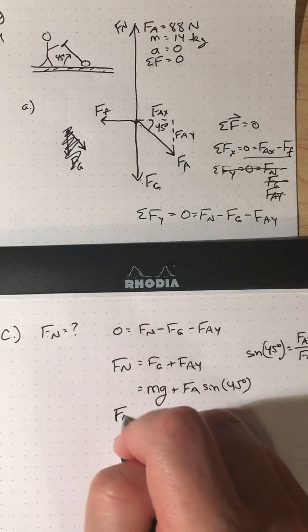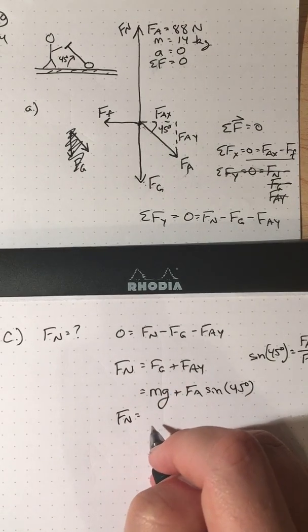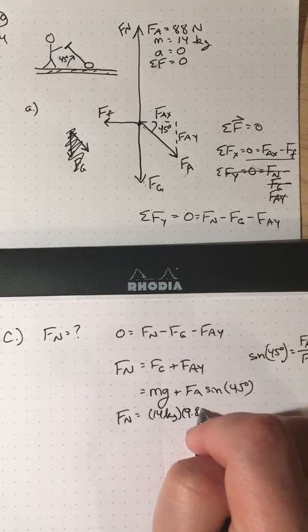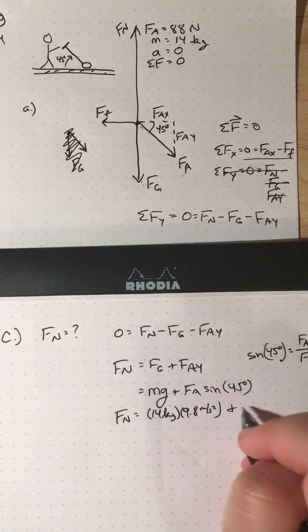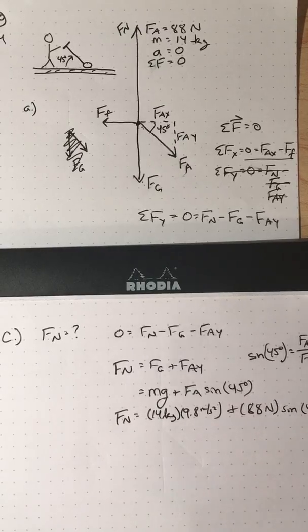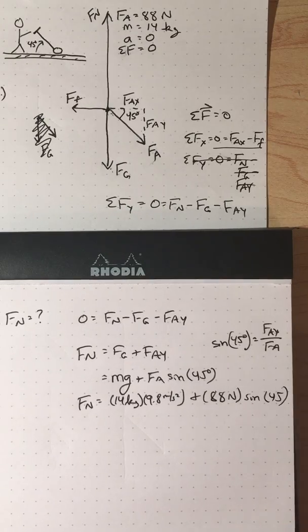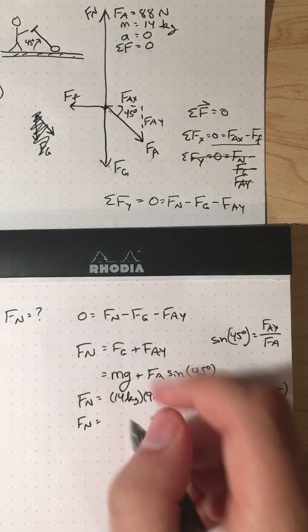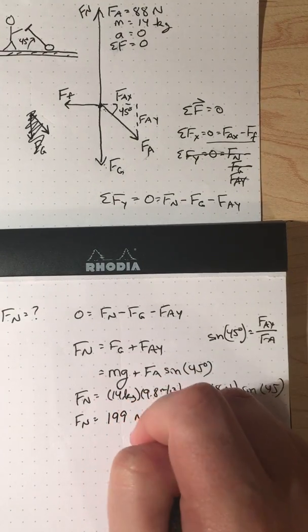And so that's my normal force. So plugging in, I've got 14 kilograms, 9.8 meters per second squared, 88 newtons, sine of 45. Sorry, I'm running out of, running off the screen there. So I'm getting a normal force of 199 newtons.